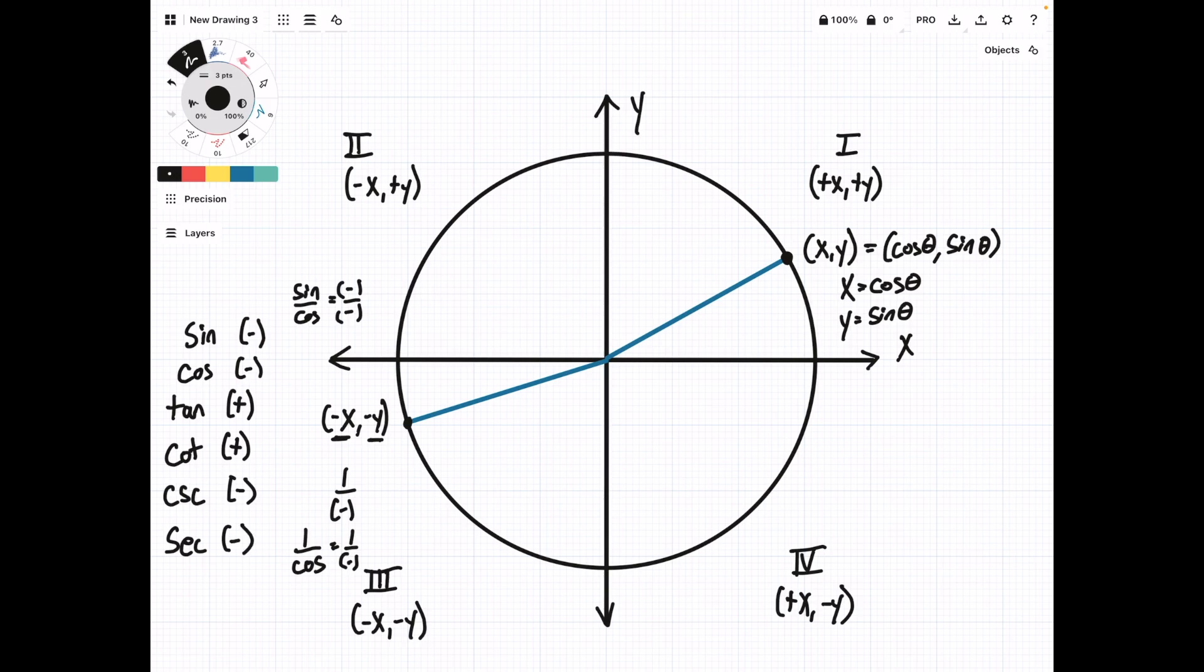And so just by knowing what quadrant we're in, we're able to infer what all of the sign values are of the trig functions.